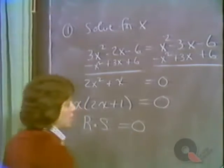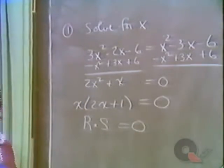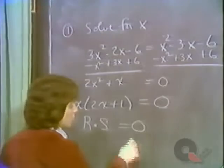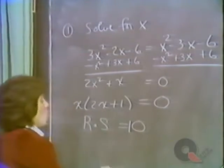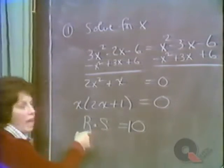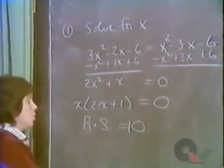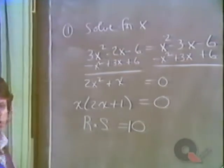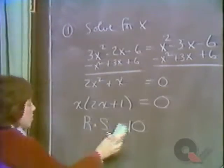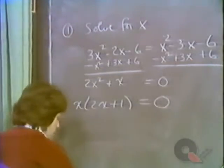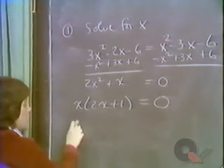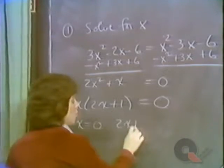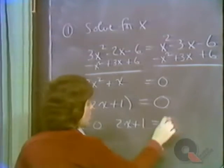This only works if you can get a product of two numbers equal to zero. If, for example, you had the product equal to ten, one could be two, one could be five — there are loads of possibilities. Zero is special: we know right away that at least one of the numbers has to be zero. So either x equals zero or 2x plus 1 equals zero.